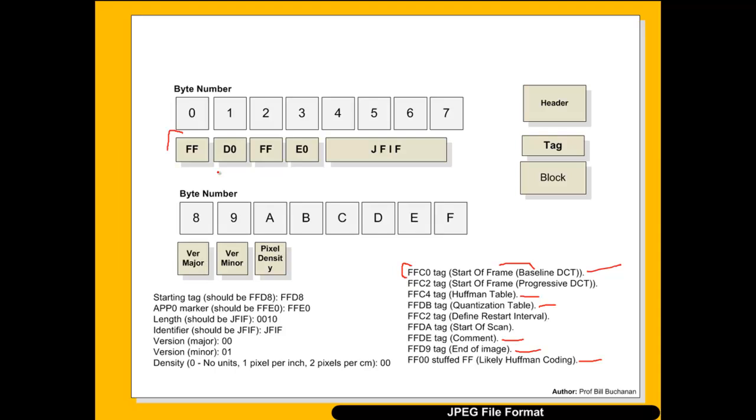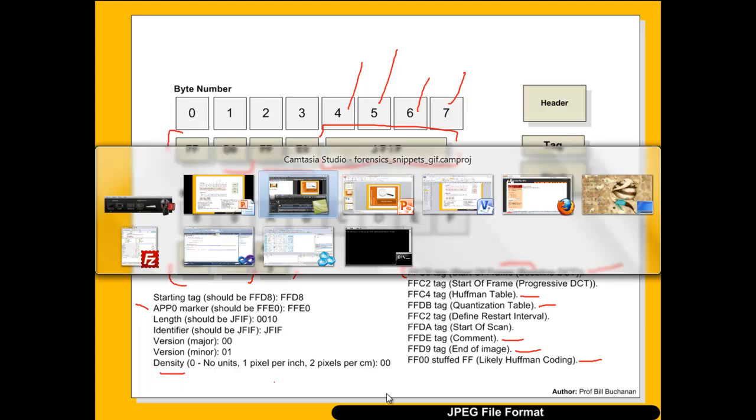And so the first thing that we should see is FFD8 at the start of the file. So this can be then followed by this FFE0 tag, which is this marker here. After that we see that this is a JFIF header identifier. And we see these characters here, here, here and here. Then we get the version number, a major and a minor, and some other details such as the pixel density. So let's have a look at an example of this on a real file.